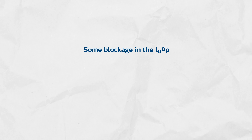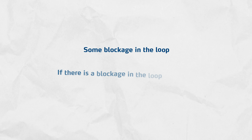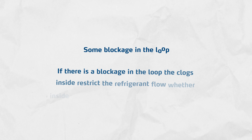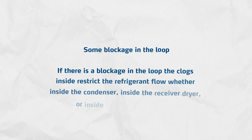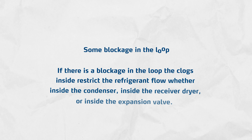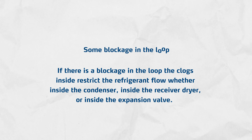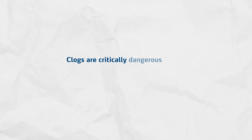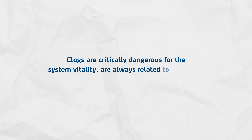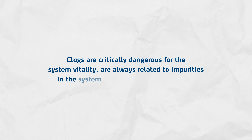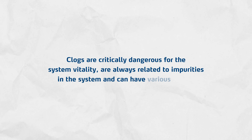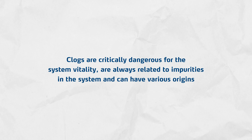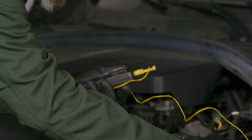Some blockage in the loop: if there is a blockage, the clogs inside restrict the refrigerant flow — whether inside the condenser, inside the receiver dryer, or inside the expansion valve. Clogs are critically dangerous for the system's vitality, are always related to impurities in the system, and can have various origins.